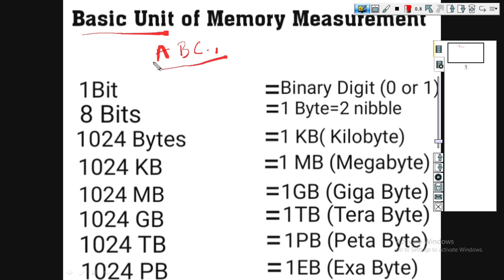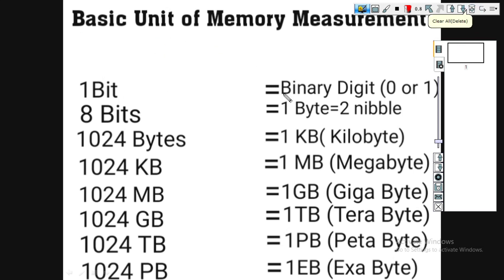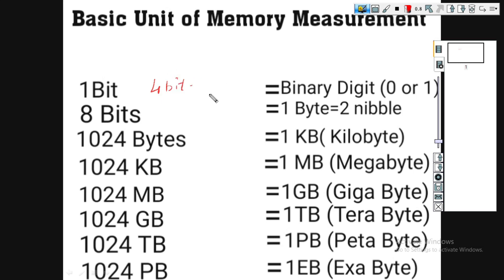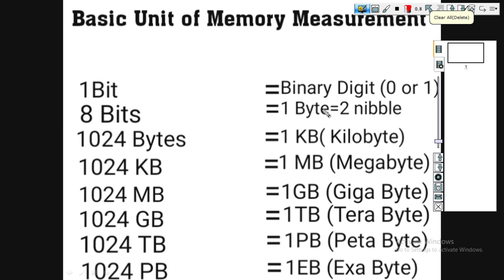So 1 bit, 2 bit, 3, 4, 5 — total 5 bits. So the starting memory unit is a bit. Binary digits are 0 and 1. So 8 bits is one character. 8 bit is equal to 1 byte. 4 bit is equal to 1 nibble — N-I-B-B-L-E.